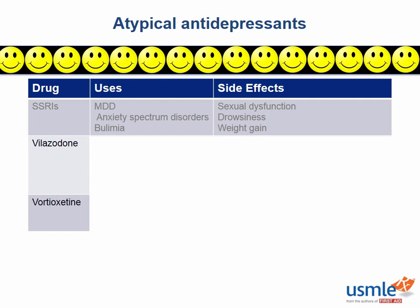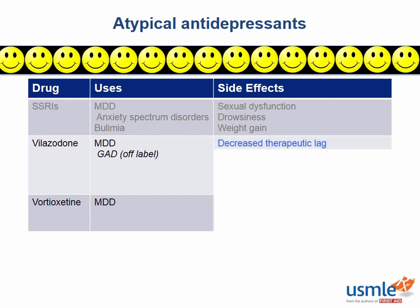The newer antidepressants, velazodone and vortioxetine, are interesting because they're not only serotonin reuptake inhibitors but also serotonin partial agonists at certain 5-HT receptors, which kind of makes them a little bit like a combination of an SSRI and buspirone — especially velazodone. You can remember this because they both conveniently end in O-N-E. Although both drugs are primarily used for major depressive disorder, velazodone is also used off-label for generalized anxiety disorder and seems to have some promising results for comorbid anxiety and depression in early studies. Velazodone's major benefit is to decrease the therapeutic lag associated with SSRIs — no more waiting one month until your depression is treated — and it has the added benefit of minimal sexual dysfunction, just like buspirone and bupropion.